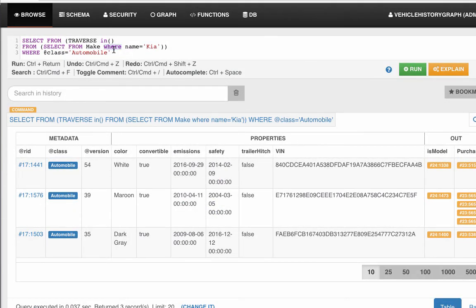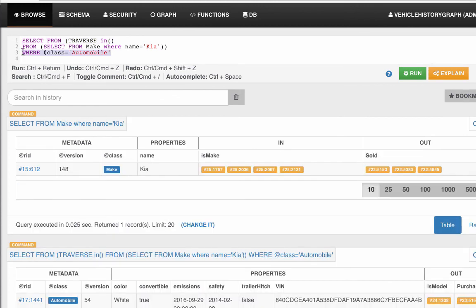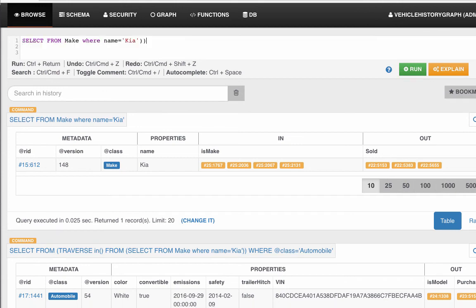To make sense of this traverse statement, we'll try to break the query down a little bit. We'll delete the where clause and start from the most nested block of information. Select from make where name equals KIA.